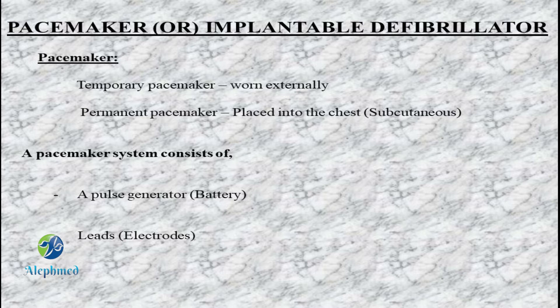We are using two types of pacemakers: temporary pacemakers and permanent pacemakers. The pacemaker components include a pulse generator, which we call a battery, and we also have electrodes and leads.